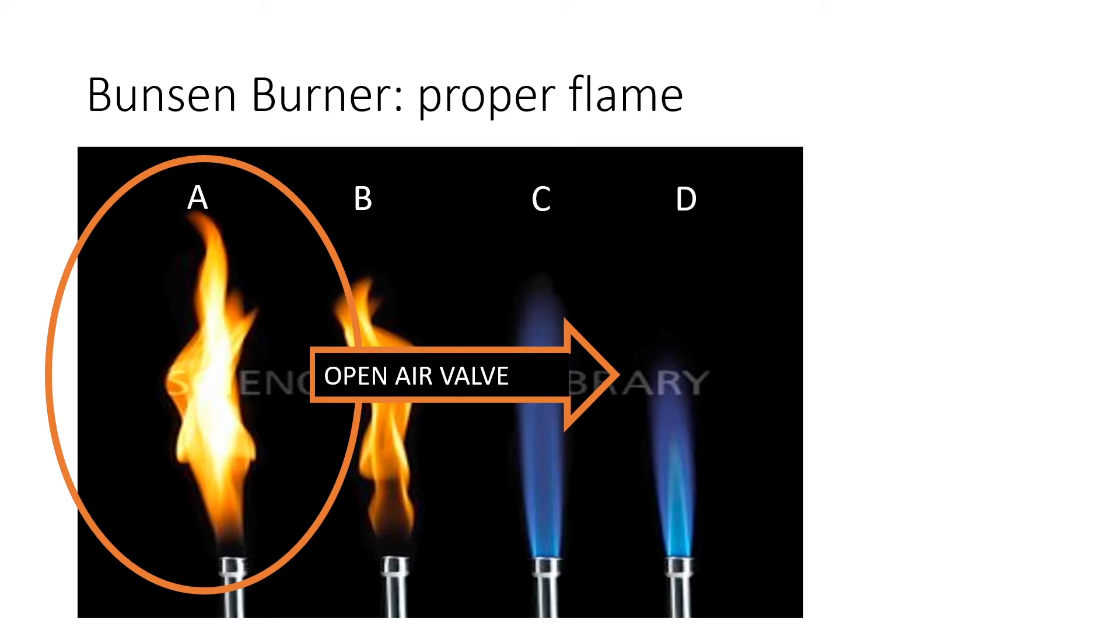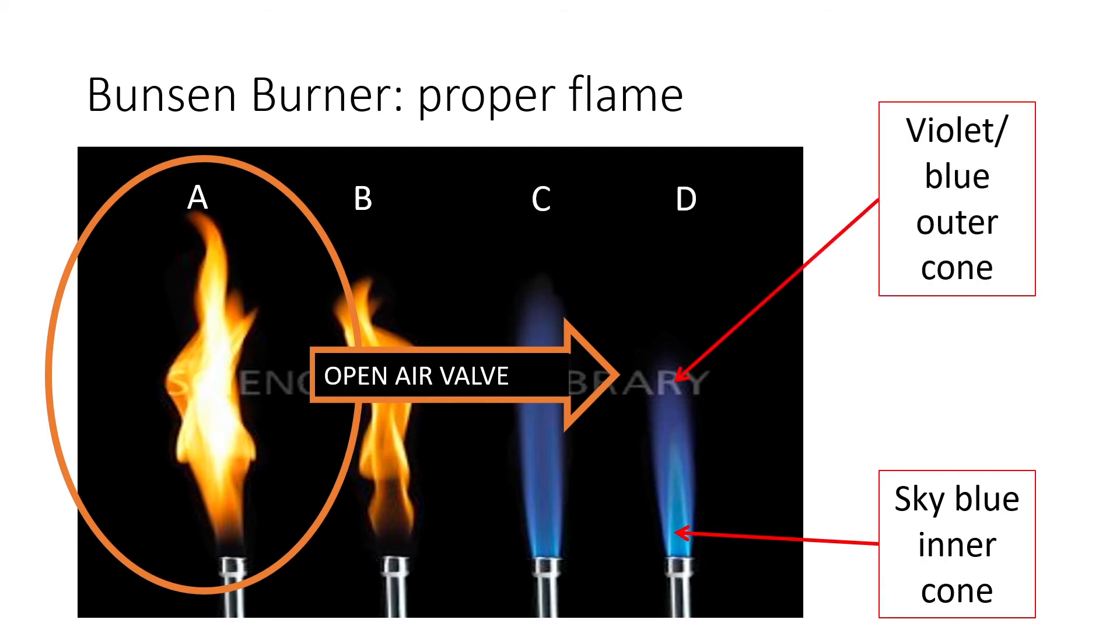To make the flame go from yellow and smoky to blue, we need to open the air valve. That yellow flame indicates that there's not enough air, not enough oxygen coming in for the combustion reaction. Notice also that in a well-formed flame you have a sky blue inner cone and then you have an outer blue-violet cone.